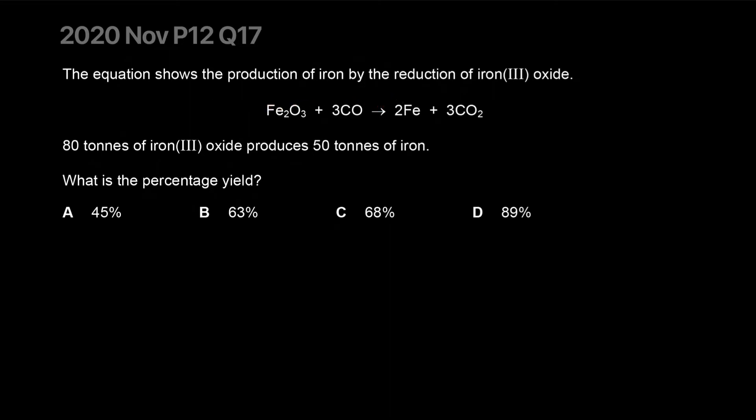The equation shows the production of iron by the reduction of iron oxide. 80 tons of iron oxide produces 50 tons of iron. What is the yield? Let's be clever about it - whenever they say tons, I go with grams. Makes my life easier. This is what was produced. I got to figure out how much would it have produced. So the ratio between Fe2O3 to 2 Fe is 1 to 2. The MR is 160 for iron oxide and 56 over here. But I'll multiply these MRs with the molar ratios.